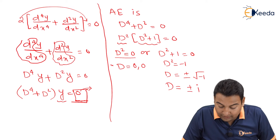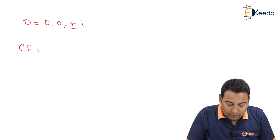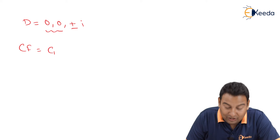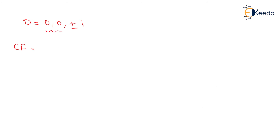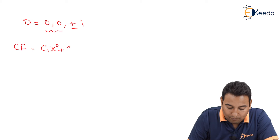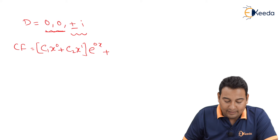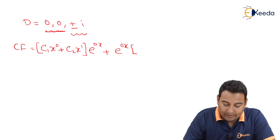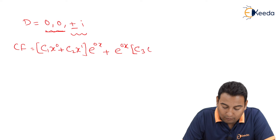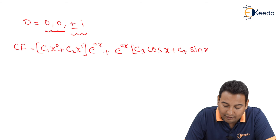The roots are 0, 0, +i, −i. For the repeated roots 0, 0: CF contribution is (c₁ + c₂x)e^(0·x) = c₁ + c₂x. For the complex roots ±i, the real part is 0 and imaginary part is 1: e^(0·x)(c₃ cos x + c₄ sin x) = c₃ cos x + c₄ sin x.